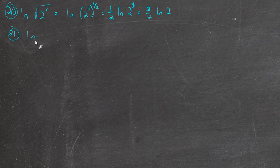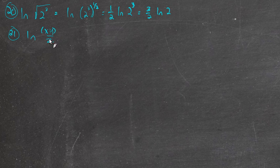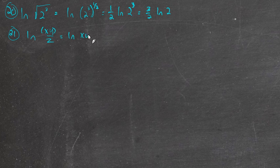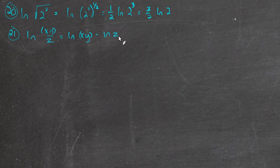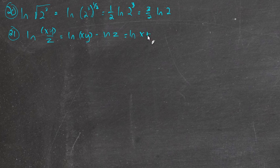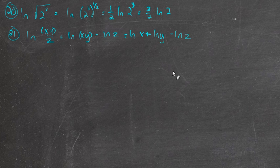Problem 21 is the natural log of x times y over z. Looking at this as a quotient first, the natural log of a number divided by another number equals the natural log of the numerator minus the natural log of the denominator. So we get the natural log of x times y minus the natural log of z, which expands to the natural log of x plus the natural log of y minus the natural log of z.